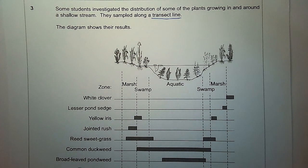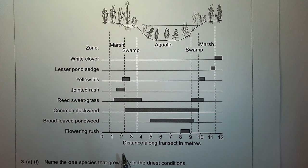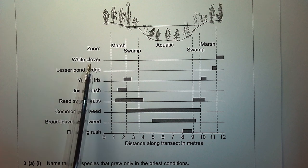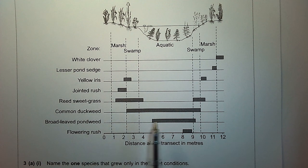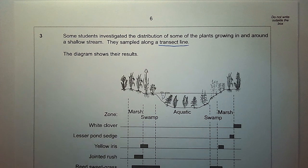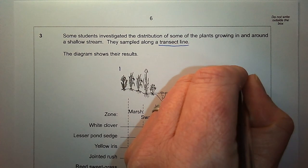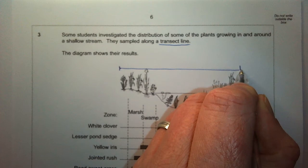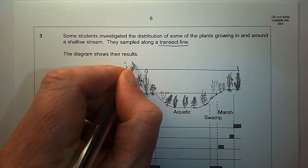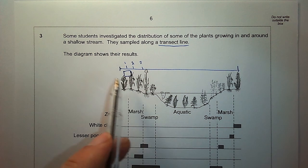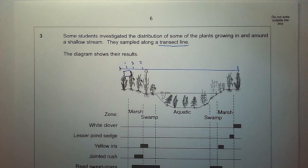The distance is shown along the bottom, going from 0 meters to 12 meters. Samples of plants were taken at equal intervals along this transect. As a reminder, a transect line involves taking a 30-meter tape across the stream, and every one meter placing a quadrat down to sample the different types of plants within that quadrat.